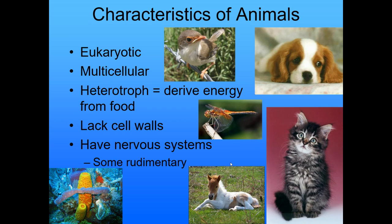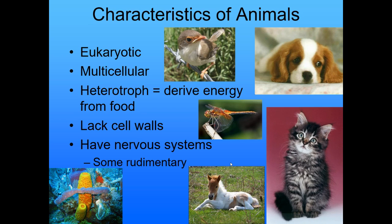What all animals have in common is that they're all eukaryotic, they're all multicellular, they're heterotrophs — which means they derive their energy from food — they all lack cell walls, and they have nervous systems. Some of them have rudimentary nervous systems. One of my favorite nervous systems is the earthworm's, because in German we call it literally the 'rope ladder nervous system' because it looks like a rope ladder.